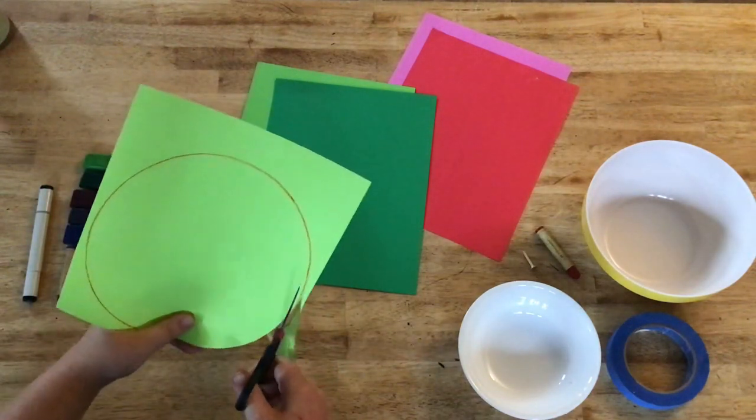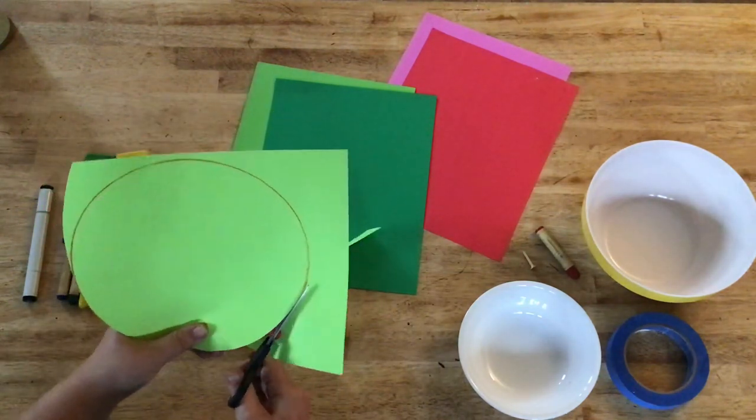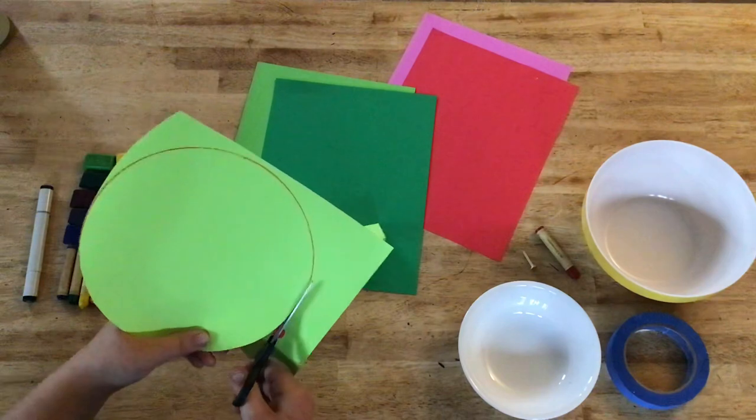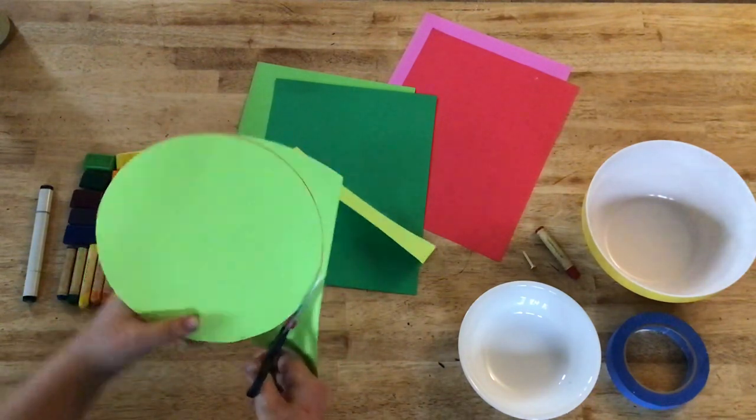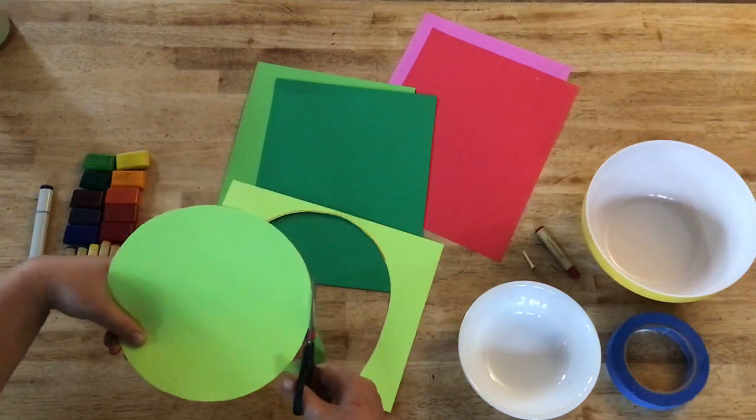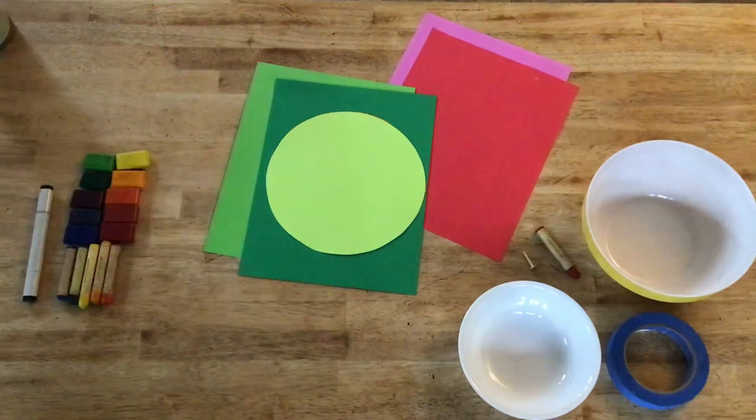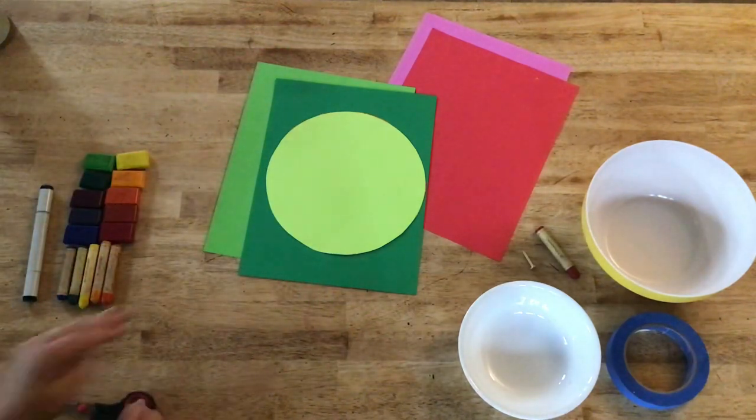Now we're going to go ahead and we're going to cut that out. Take your time cutting it out, making sure that you're cutting the best circle that you can. Now I have my largest circle finished, and I don't need this paper anymore unless I want it for details.